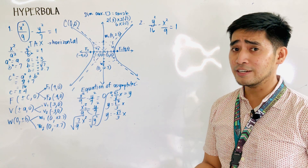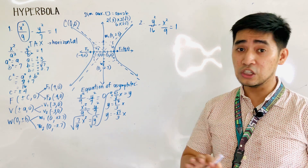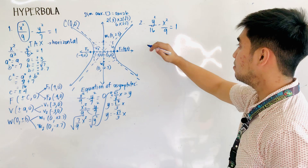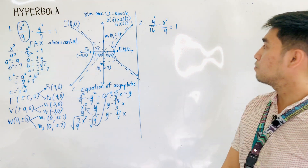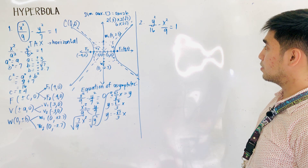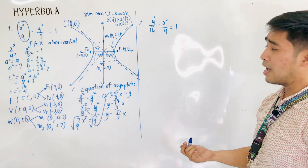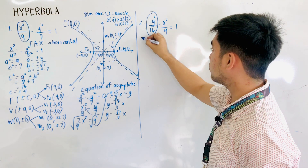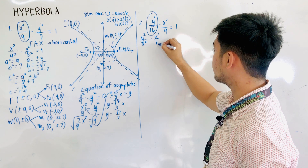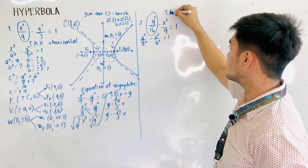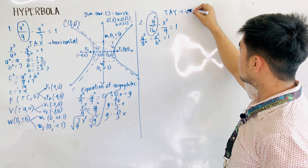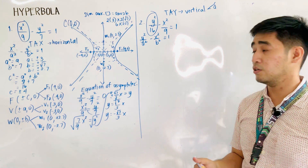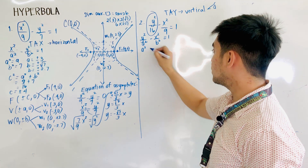That is how we sketch a hyperbola when the transverse axis is horizontal. Now for the second example, where the transverse axis is the y-axis — the process is still the same, but the transverse axis is now different. We are given y squared over 16 minus x squared over 9 is equal to 1. To determine the transverse axis, we identify the positive term, which is y squared over 16. It now takes the form y squared over a squared minus x squared over b squared equal to 1, making this a vertical transverse axis.